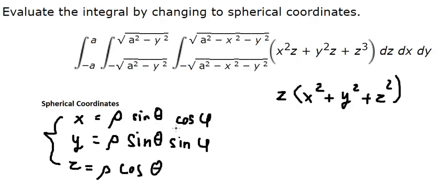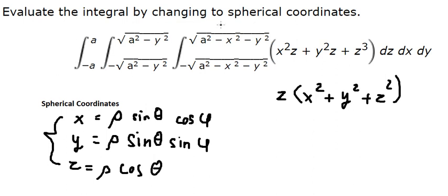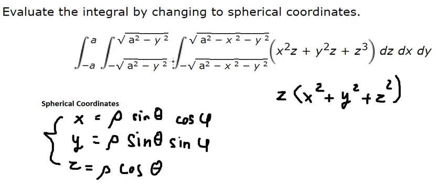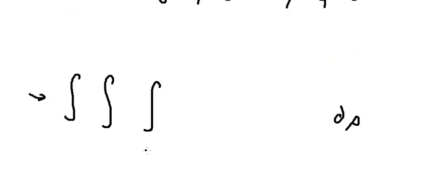So if we look at the bounds here, we can see that the bounds cover the sphere. So in this situation, the bound for d rho represents the radius of the sphere. We can see that the radius is about a. So that should be bound from 0 to a.